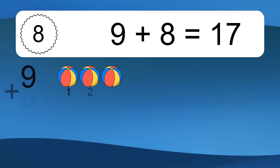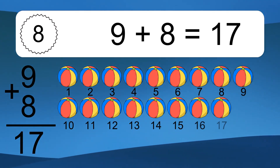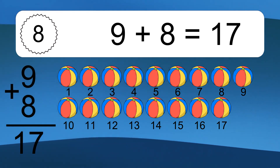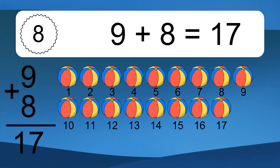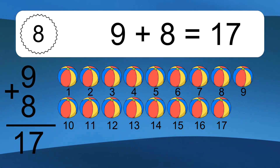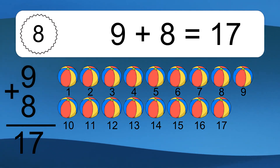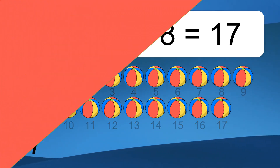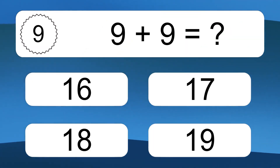9 plus 8 equals what? 9 plus 8 equals 17. Let's count it. 1, 2, 3, 4, 5, 6, 7, 8, 9, 10, 11, 12, 13, 14, 15, 16, 17.